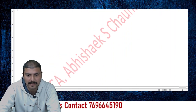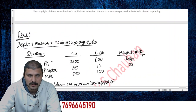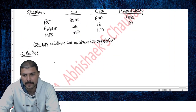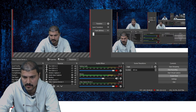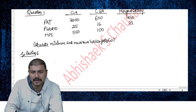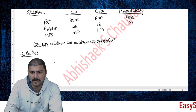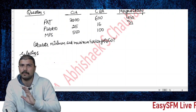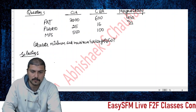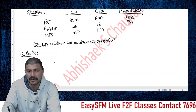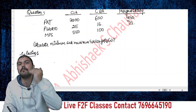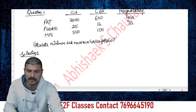Now let's solve the actual question. There are two companies: CIA and CBA, and a merged entity. The PAT (earnings) for CIA is 3000, CBA is 600, and combined earnings are normally 3600 but due to synergic effects the combined earnings are 4140. PE ratios are: CIA = 25, CBA = 16, merged entity = 22. With earnings and PE ratios available, we can calculate market values by multiplying them.